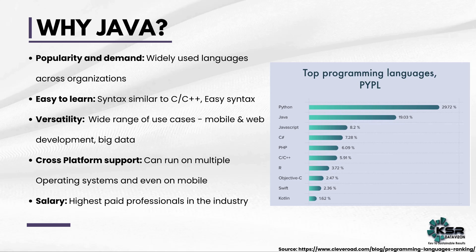We have seen some technical definitions and introduction to Java. Now let's see why we need to learn Java. First, because of its demand — Java is widely used across many organizations. Looking at the survey graph for top programming languages, Java stands second, showing how popular and demanding it is. Next, Java is easy to learn; its syntax is similar to C or C++, which is taught in most engineering colleges. Next is its versatility — Java is used in a wide range of use cases like mobile app development, full stack development, big data, and machine learning. Next is cross-platform support — Java can run on multiple operating systems and even on mobile.